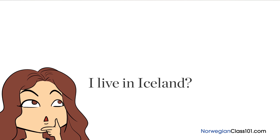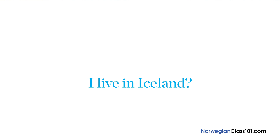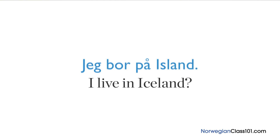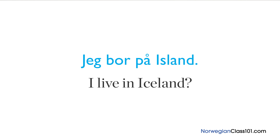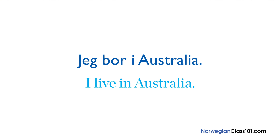Here's a tricky one — Iceland is a country, but also an island. So how would you say 'I live in Iceland'? We say jeg bor på Island, using på. But for the sentence 'I live in Australia,' even though Australia is an island, we use i: jeg bor i Australia.